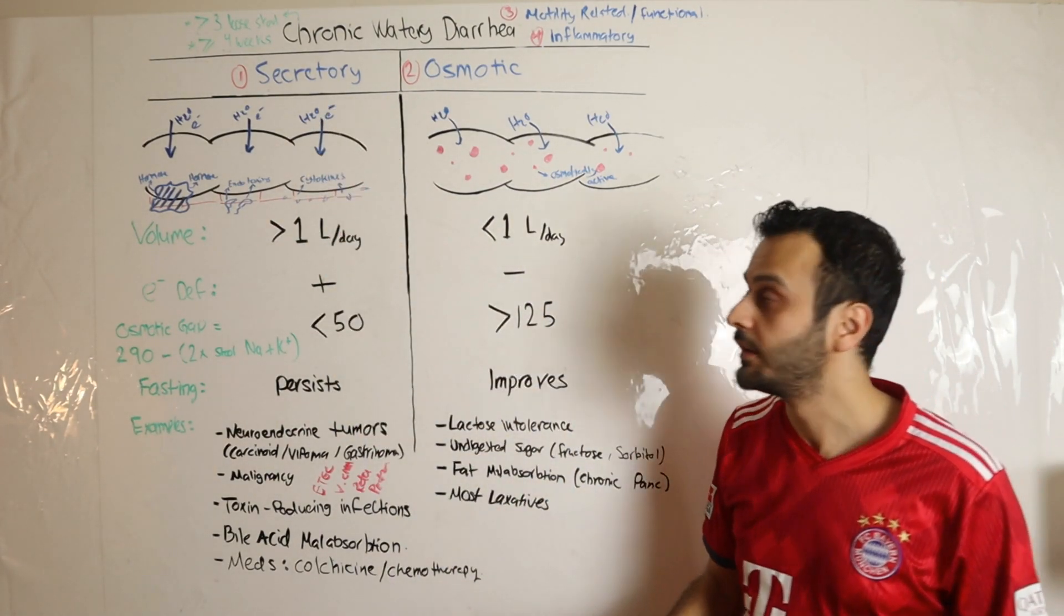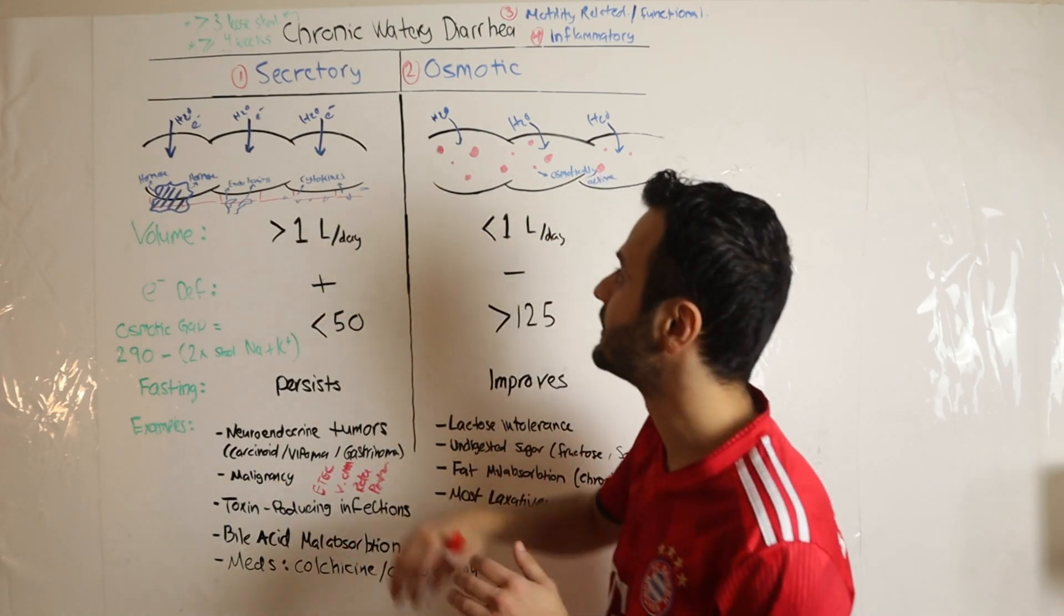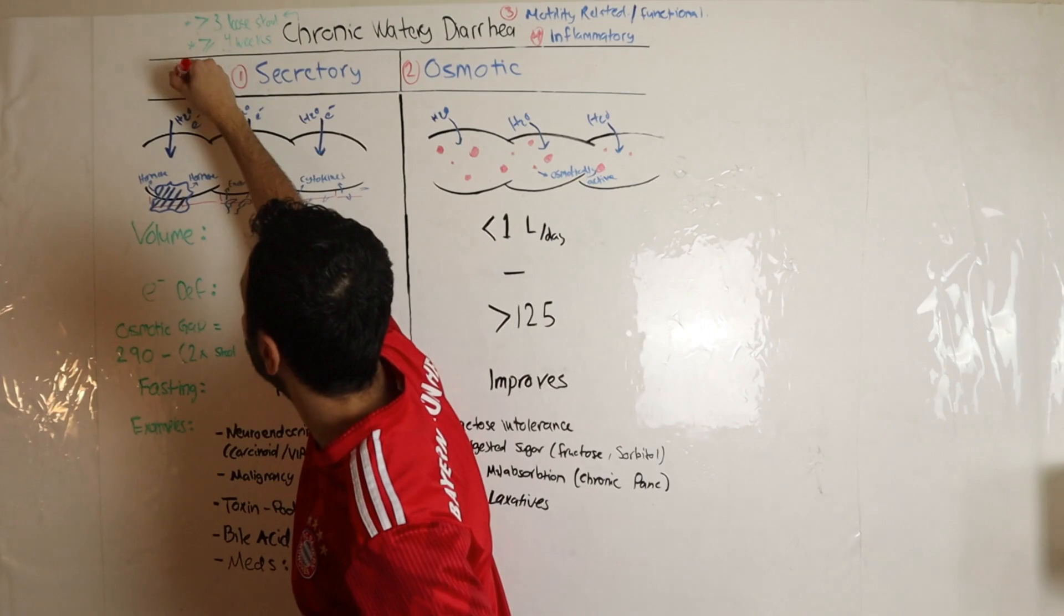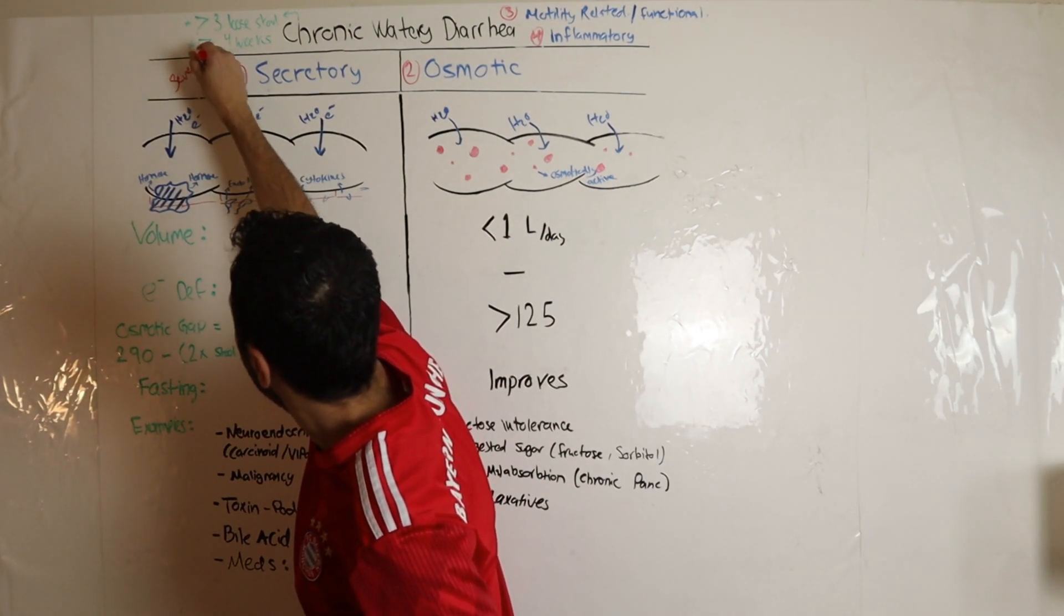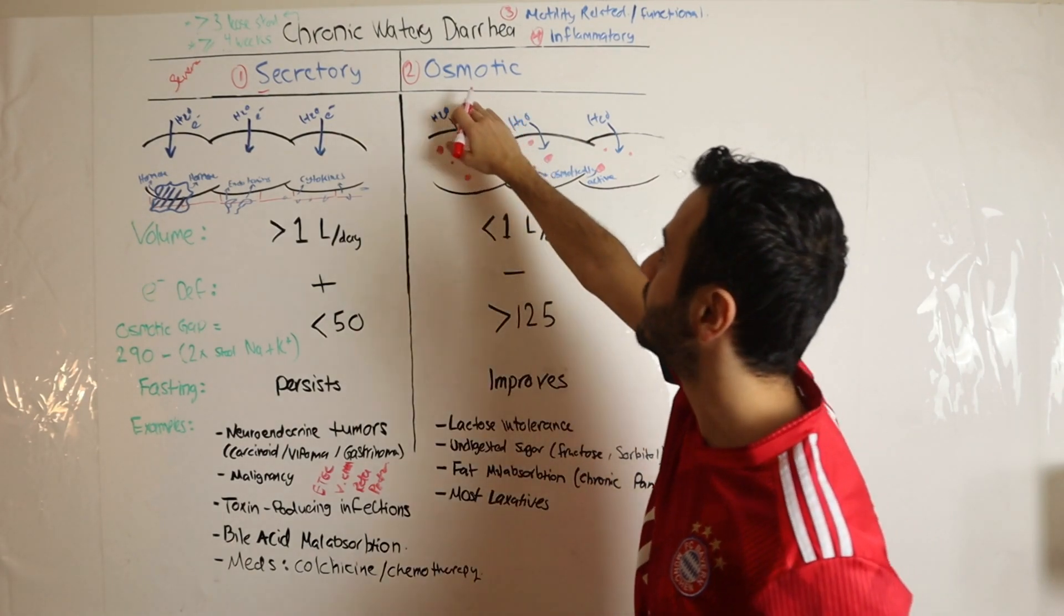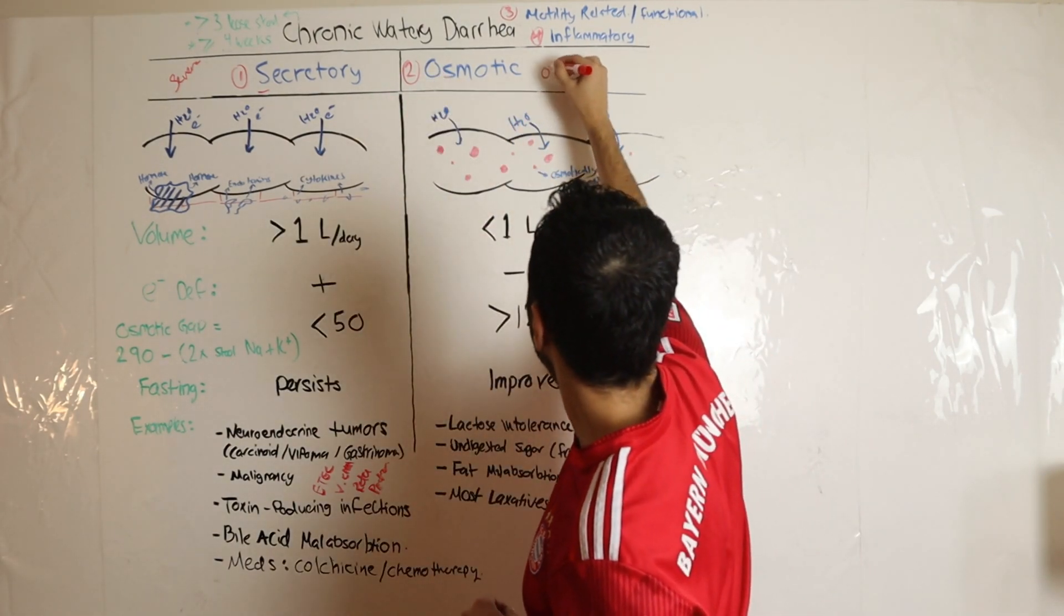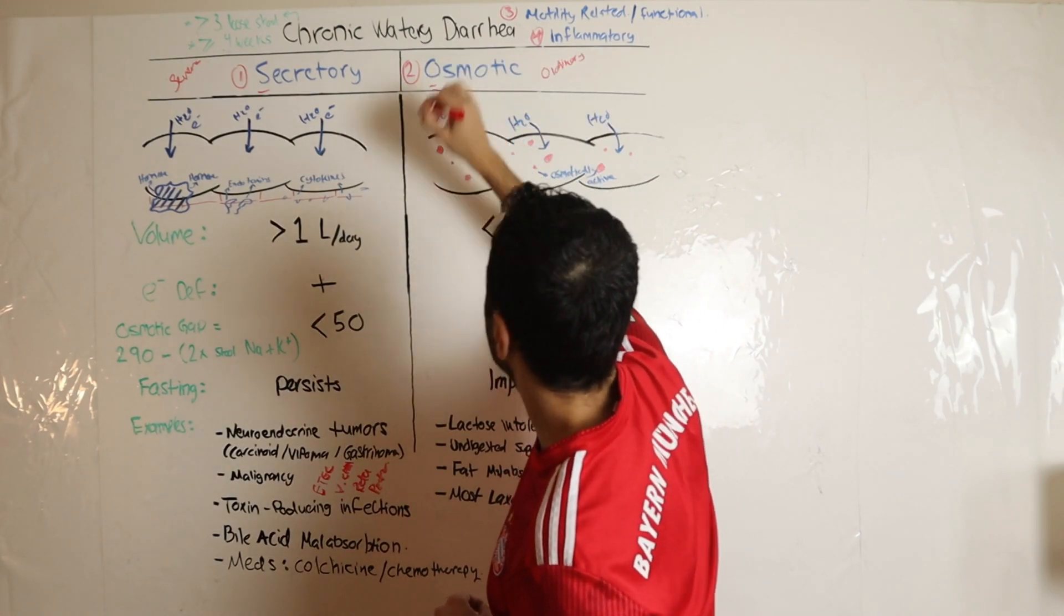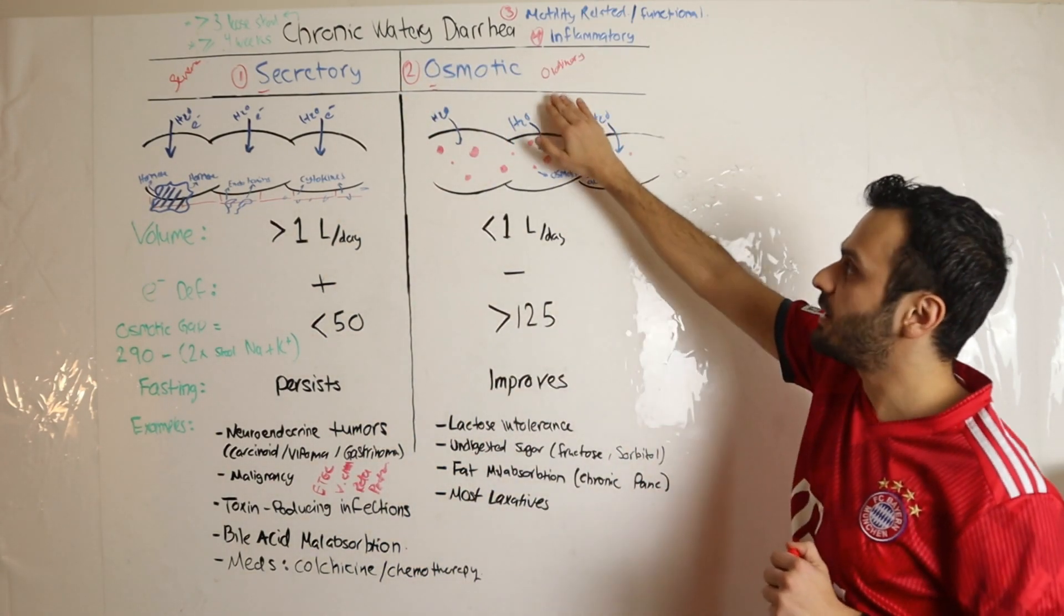Now, as I mentioned, secretory diarrhea is the bad one, it's the severe form. Remember, S for secretory stands for severe form. The milder one is osmotic, and it starts with an O for ordinary – that's an easy way for you to remember.